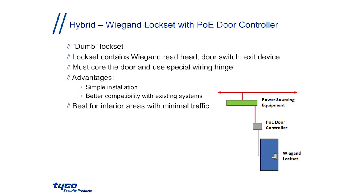A sort of hybrid option is a Wiegand lock set with a PoE door controller — a marriage of the controller with a more traditional lock set that has no database. The lock set has a Wiegand reader, door switch, and PIR built in, but the wiring comes out as traditional leads: six for the Wiegand read head, two for the lock, two for the door switch, and two for the PIR, all wired up to the controller. There are no compatibility issues — these work on old and new systems without software driver concerns. The controller handles the door decision, and the lock set is just along for the ride.